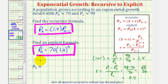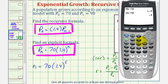And now to find p₅, we'll use the explicit formula, because if we use the recursive formula we'd need p₄, which we don't have — we could find it but it would take quite a bit of work. So using the explicit formula, p₅ is equal to seventy times one point four raised to the fifth power. Our directions tell us to round to at least one decimal place, so we round to the tenths place. The seven in the hundredths place indicates we round up, so p₅ is approximately three hundred seventy-six point five.